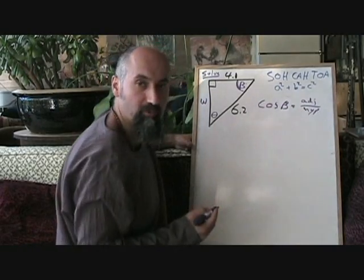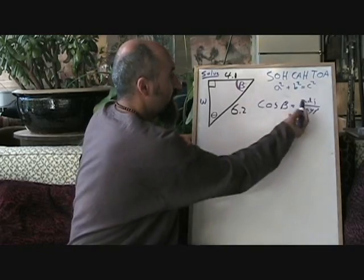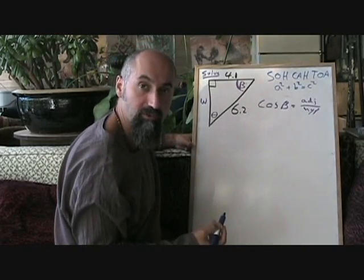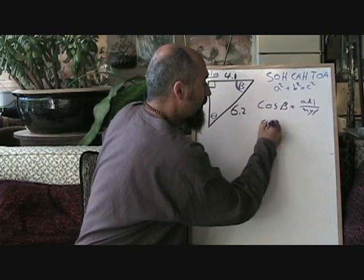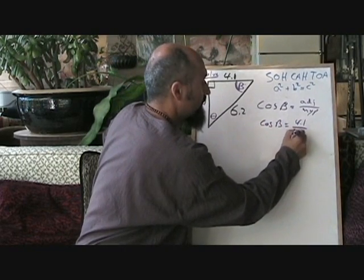Cos theta is equal to adjacent over hypotenuse. We're looking for beta. We don't have it, so that stays where it is. We have the adjacent, which is 4.1, and we have the hypotenuse, which is 6.2. So we're going to go cos theta is equal to 4.1 over 6.2.